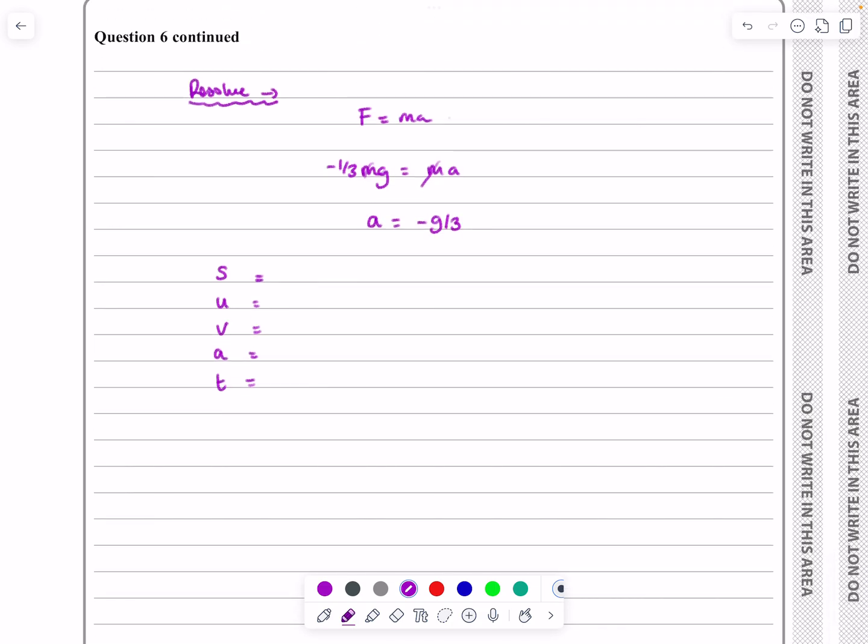So what did we say? It goes a distance d. It was set off with a speed of u. At the point where it is at d, the speed is half u. We've just calculated minus g over 3. I'm not interested in t in this question. I'm trying to work out what s is. I've got u, v, and a. s, u, v, and a is going to be our kinematics equation: v squared equals u squared plus 2as.